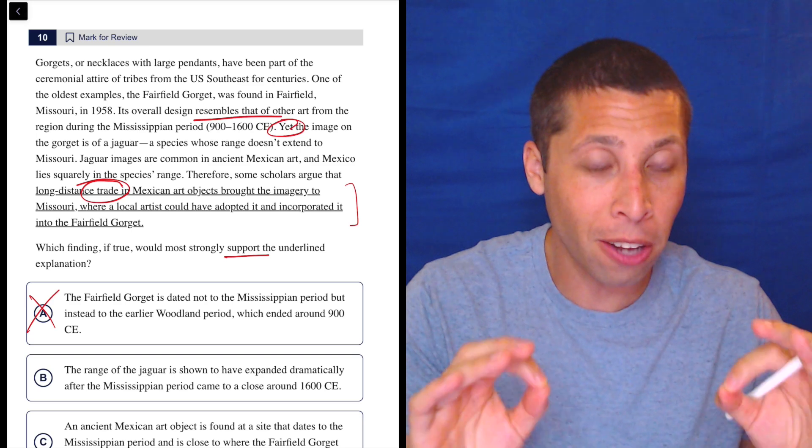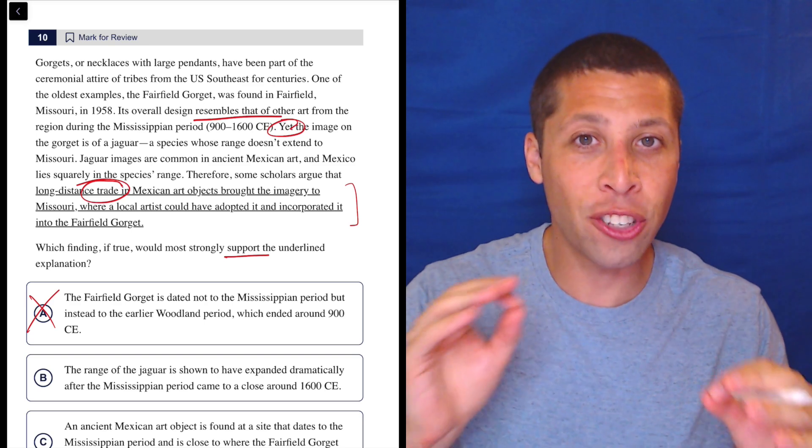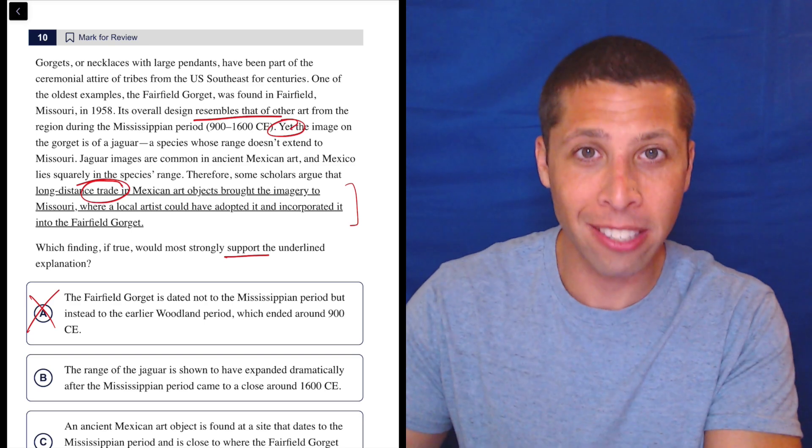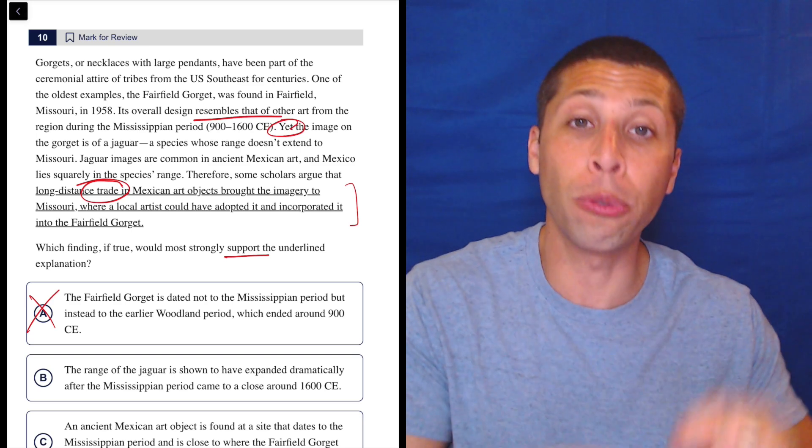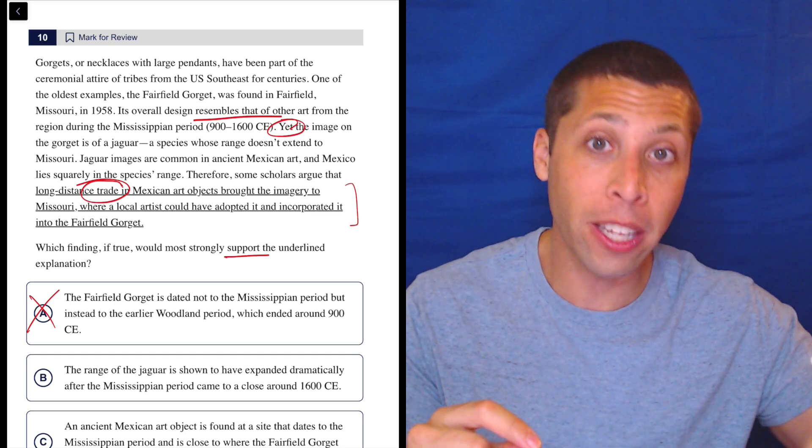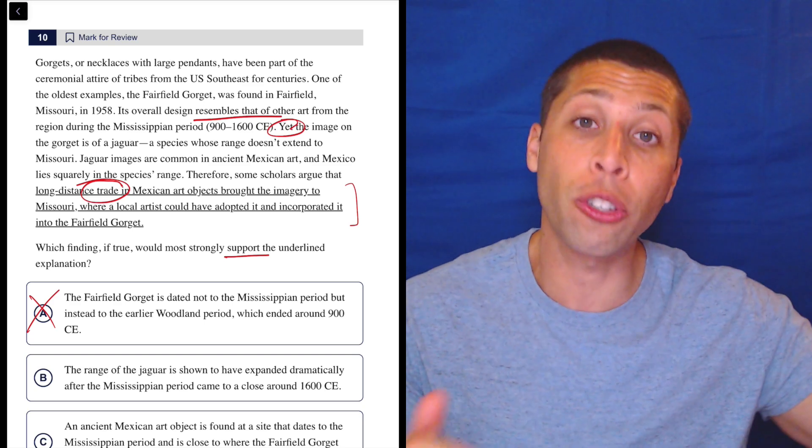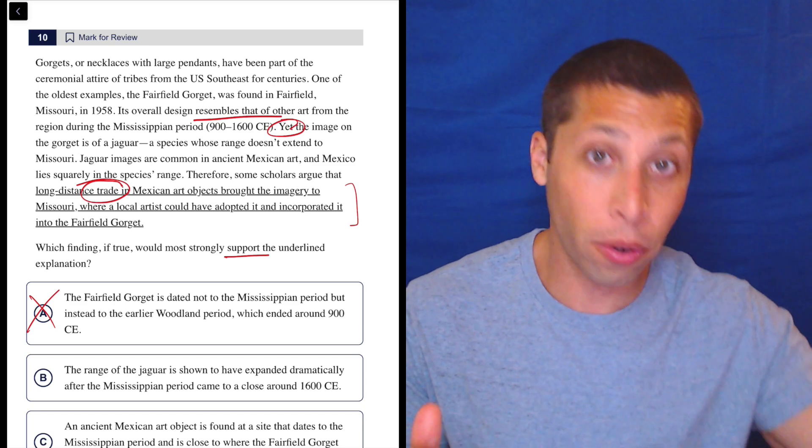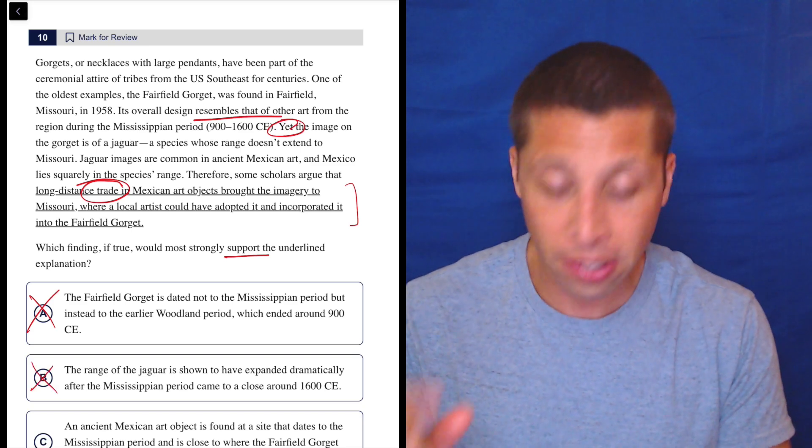But the point of the underlined portion is that the jaguar was not in this place. The only reason they know about it is through trade. So this is not strengthening the argument in the underlined. It's weakening it. It's providing an alternative explanation for this same phenomenon. So this is a trap for sure.